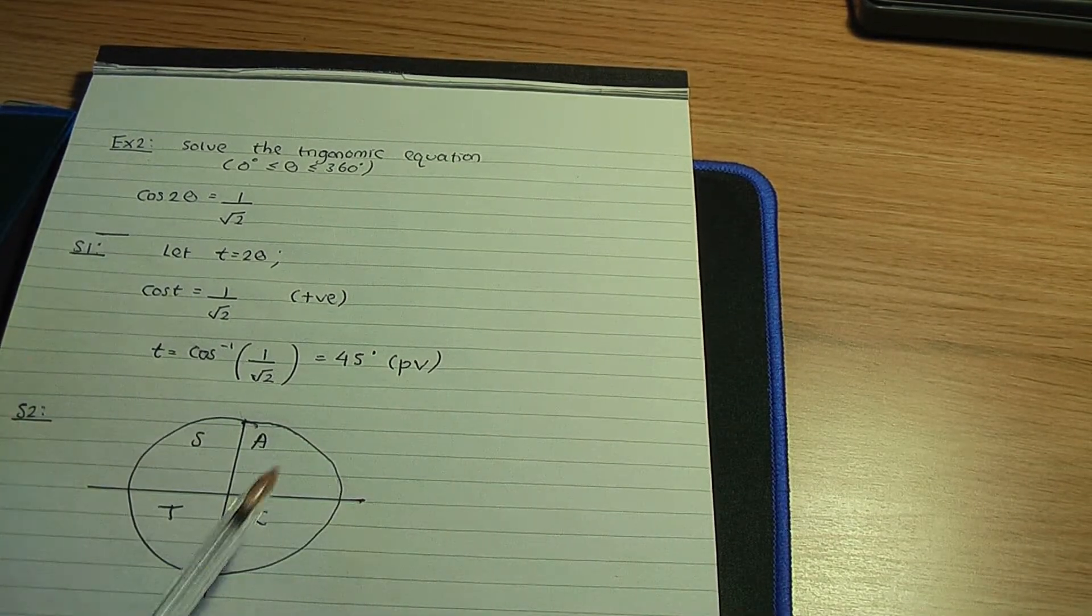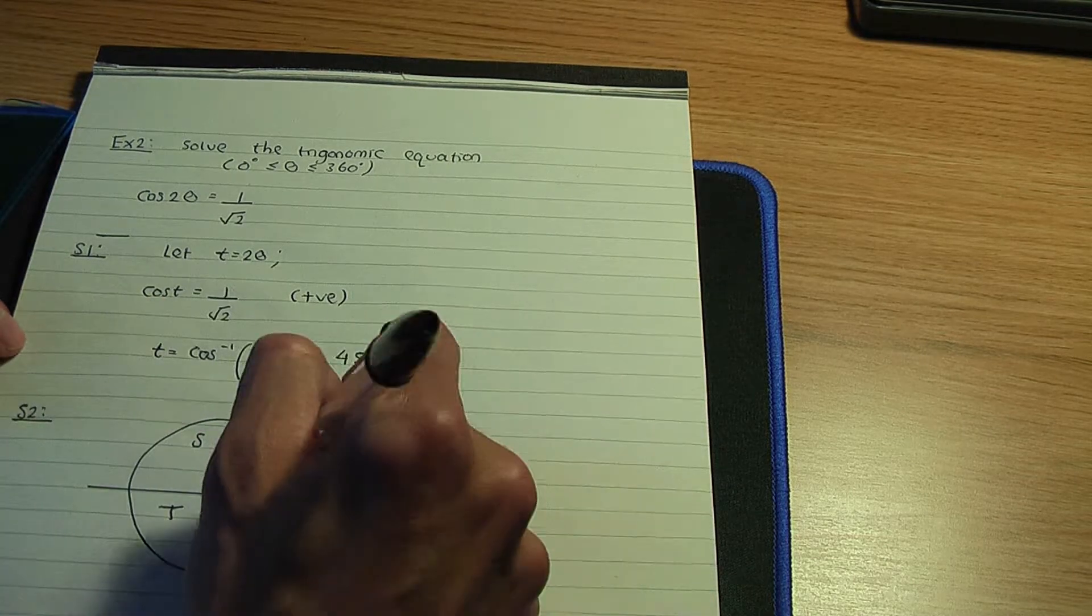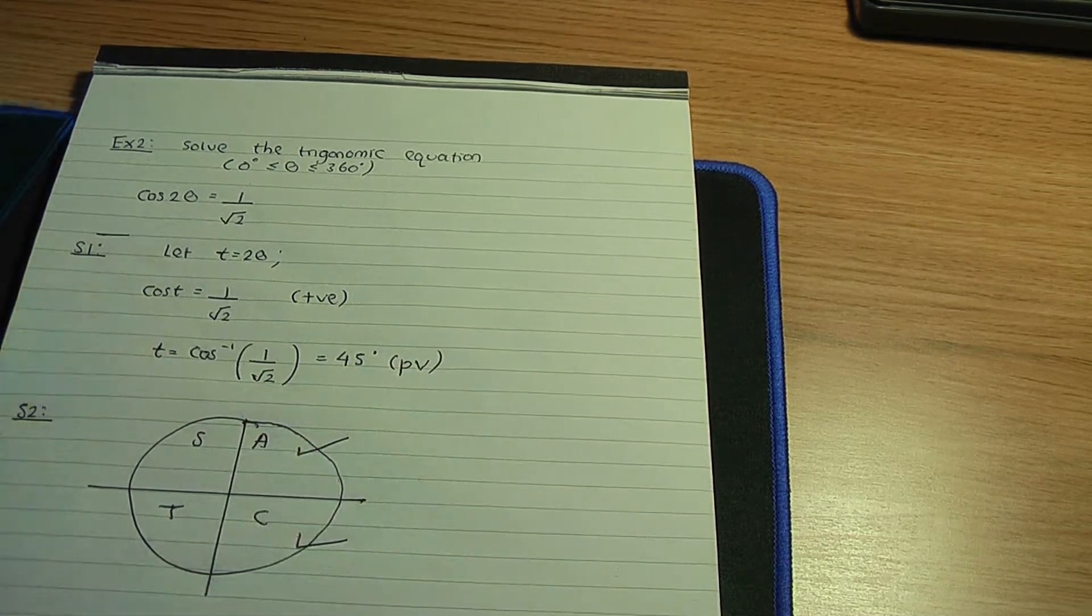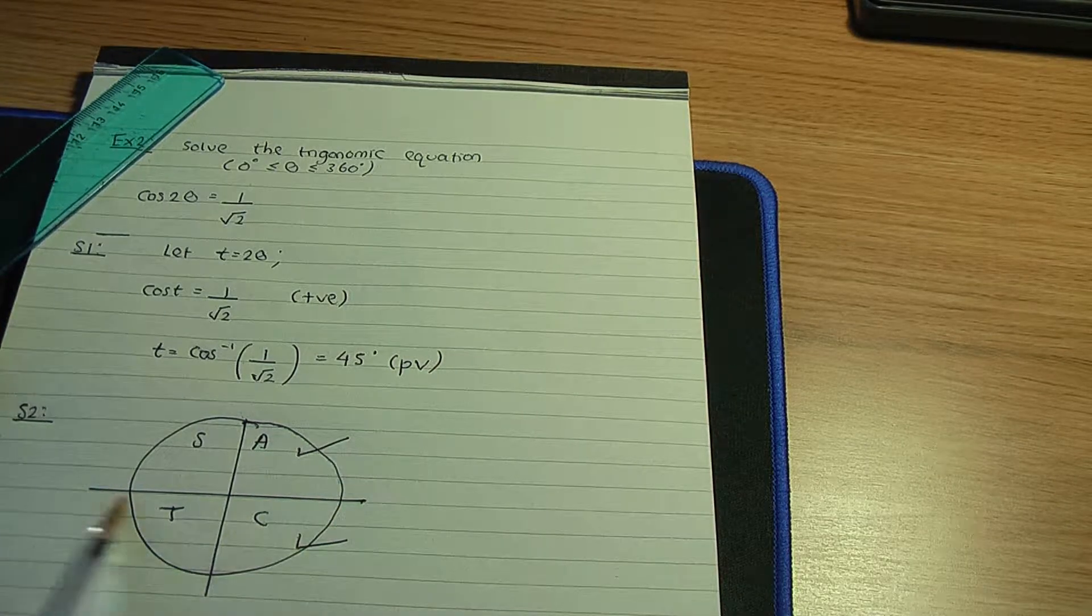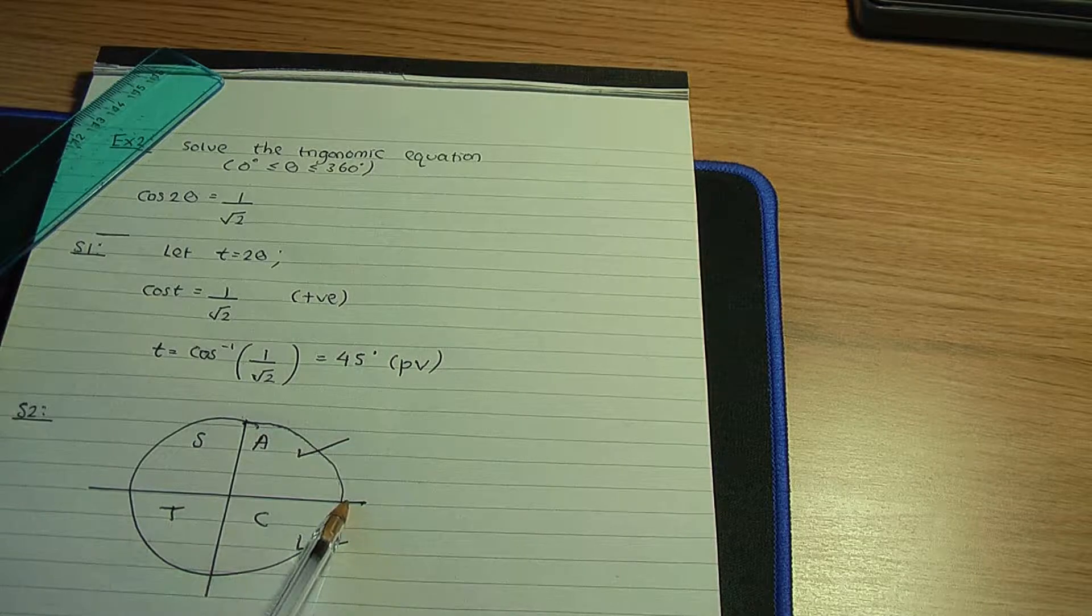Remember, 45 degrees where cos is positive. Cos is positive in the first and fourth quadrants. And remember, bearing in mind we're measuring the angles from the horizontal.